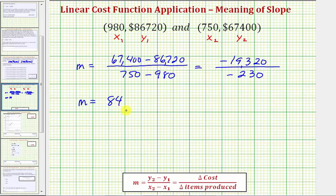Let's also include the units. Because the numerator is in dollars and the denominator is the number of items, the units on the slope would be $84 per item. So because the slope is positive, this means the costs are increasing $84 per item.